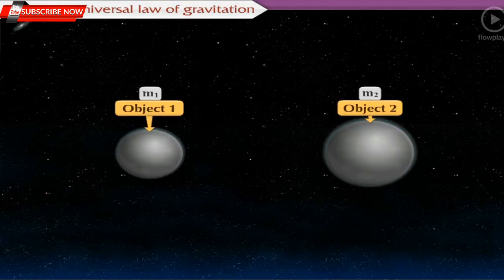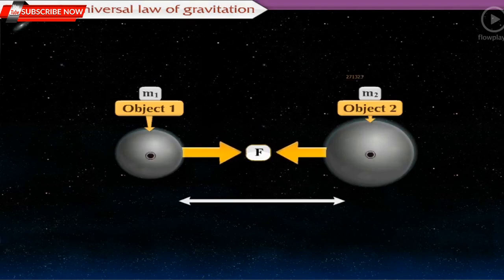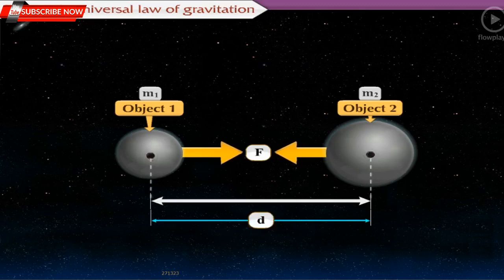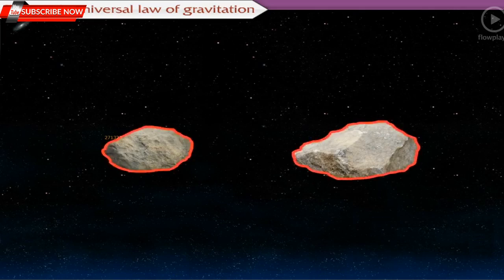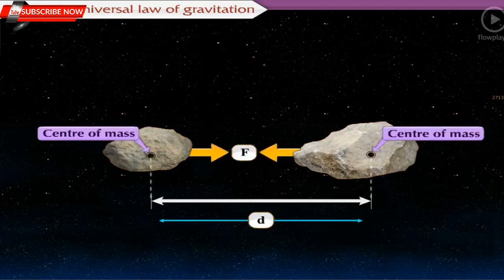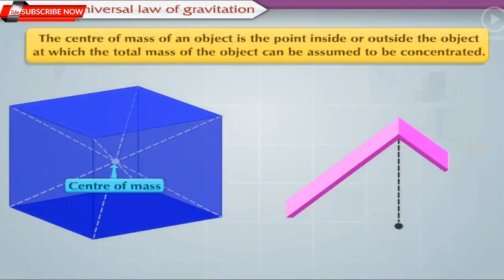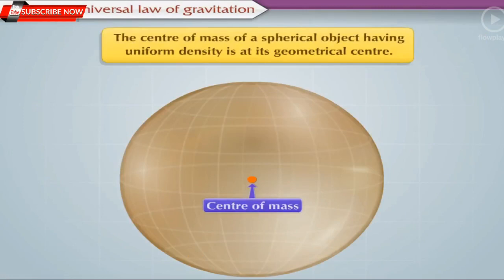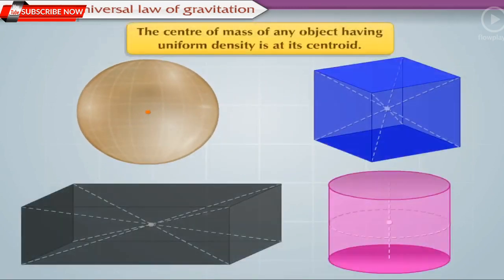If two bodies are spherical, the direction of the force is always along the line joining the centers of the two bodies, and the distance between the centers is taken to be D. But if two bodies are not spherical or have an irregular shape, then the direction of force is along the line joining their centers of mass, and D is taken to be the distance between the two centers of mass. The center of mass of an object is the point inside or outside the object at which the total mass of the object can be assumed to be concentrated. The center of mass of a spherical object having uniform density is at its geometrical center, and the center of mass of any object having uniform density is at its centroid.